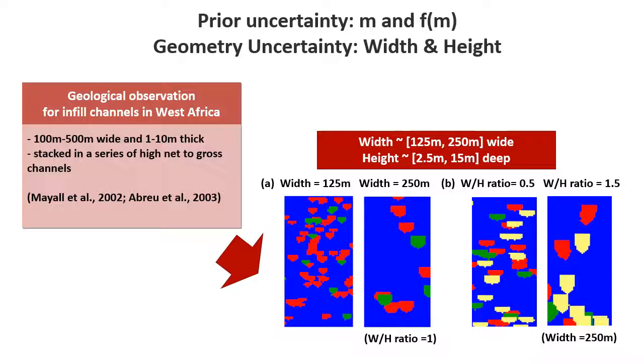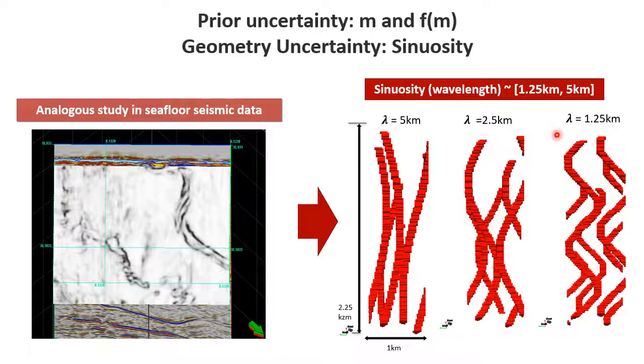Then you have sinuosity. Sinuosity is actually something we also observe at the seafloor or in seismic data that's very shallow. From that, we can get some understanding of what are possible sinuosities here measured as wavelengths. Those are from 1.25 kilometers to 5 kilometers.